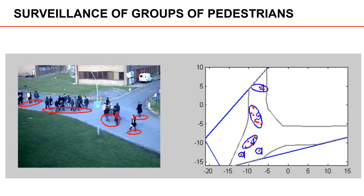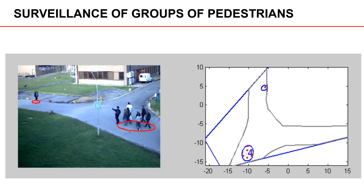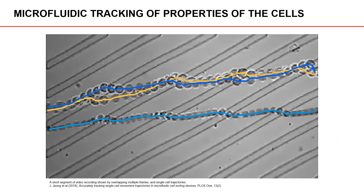In general, crowd surveillance is useful, for example, for analysis and understanding of crowd behavior, planning of emergency procedures, and for providing security. Multiple object tracking is also applicable for different biological inquiries. In this slide, we see a short segment of microscopic video that is shown by overlapping multiple frames. The strings of round objects that can be seen are cells that have moved, and the colored lines represent the trajectories of the tracked cells. This particular image is from research in microfluidics, which is a promising technology for biological inquiries at the single-cell level. One interesting application is the study of single-cell biomechanical characteristics, such as elasticity, viscosity, stiffness, and adhesion. To achieve this goal, an algorithm for accurately tracking cell trajectories is important for modeling the flow, the forces, and the dynamics of cell properties.